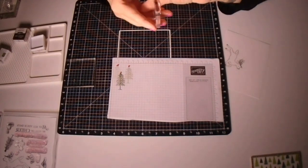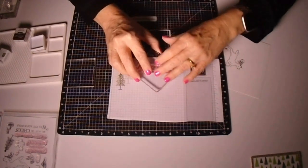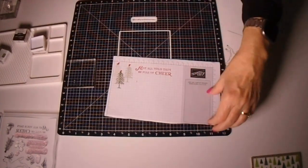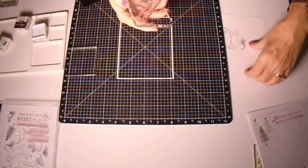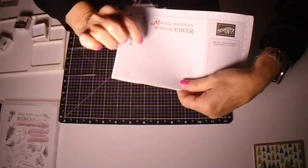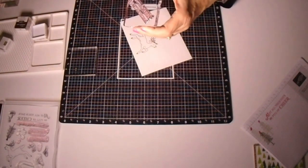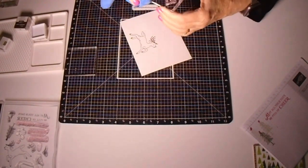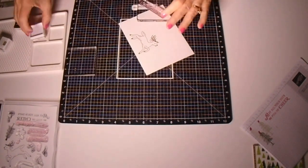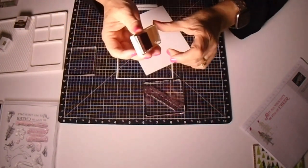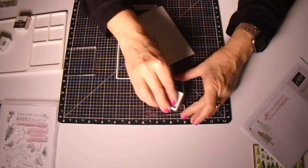I inked it up with a real red stamping spot and then tested it out on some scratch paper first. And then once I liked it and I was sure that it was straight, I'll go ahead and stamp it on my card panel. And I think it's stamped great.